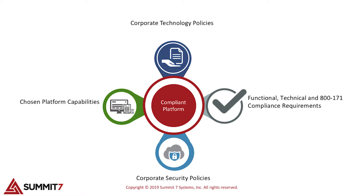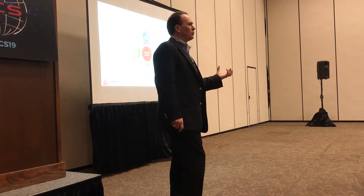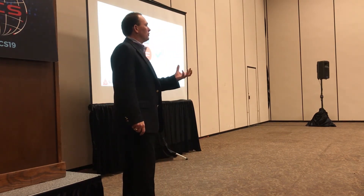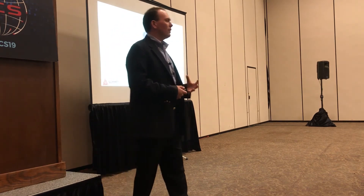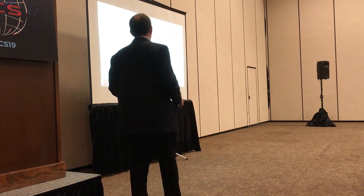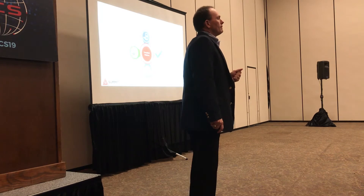It's not all technical though — you also have to have your functional and business requirements. It doesn't help if you have all your compliance pieces in place but haven't taken into consideration how your business runs. You've got to understand how your business runs and build those requirements into the system as well. The last piece is your chosen platform capabilities. If you have your policies and compliance requirements defined but you pick a platform that can't meet them, you've failed. All four pieces have to work together as part of a single integrated rollout.